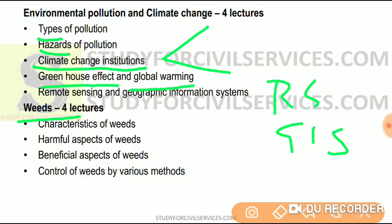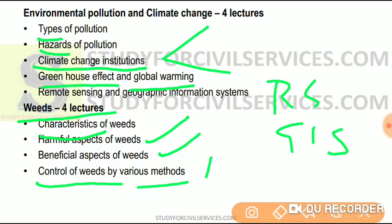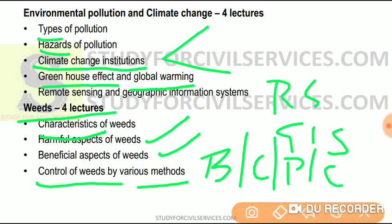After that we have weeds — again four lectures. We will study the various characteristics of weeds, their classification, and how many types of classification exist. Then we will cover the harmful aspects of weeds, the beneficial aspects of weeds, and the control of weeds by various methods — biological method, chemical method, physical method, and cultural method — and how each of these methods helps us control weeds.